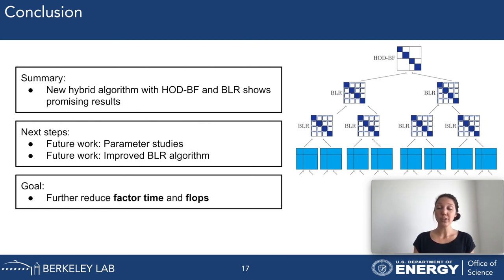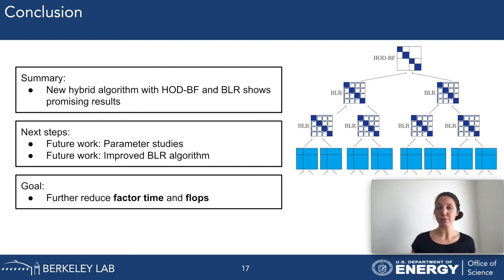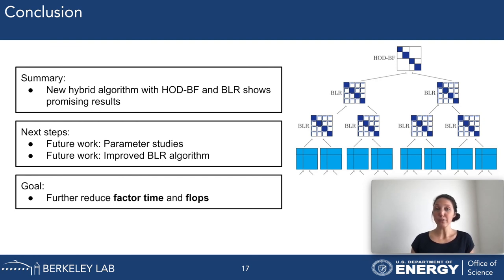I am currently working on a new implementation of the block-low-rank algorithm: a so-called left-looking algorithm, as opposed to the right-looking algorithm used before. Studies suggest this may benefit our implementation, especially the parallel version. Our general outlook is that we can improve the factorization time and factorization flops even further. With this, I would like to conclude my talk and I am happy to answer questions.